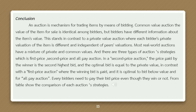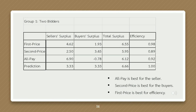There are three types of auction strategies: first price, second price, and all-pay auction. In a second price auction, the price paid by the winner is the second highest bid, and the optimal bid equals the private value. In a first price auction, the winning bid is paid and it is optimal to bid below value. In an all-pay auction, every bidder must pay their bid price whether they win or not. From the comparison table: all-pay is best for the seller, second price is best for the buyers, and first price is best for efficiency.